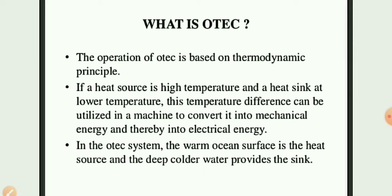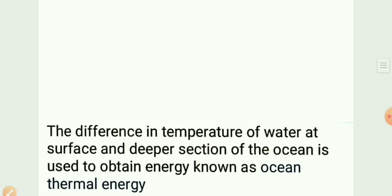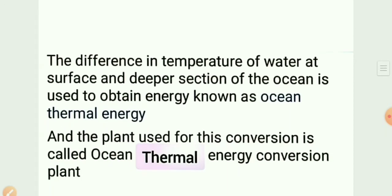Thereby we can get electrical energy by a generator. In the ocean thermal energy conversion system, the warm ocean surface is the heat source and the deep, cooler water provides the sink. The difference in temperature between the surface and deeper sections of the ocean is used to obtain the energy known as ocean thermal energy.